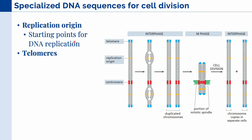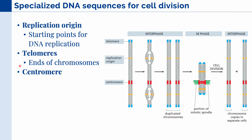Next, we have telomeres, which are the ends of chromosomes, and these are used to prevent damage to the ends of our different chromosomes. Lastly, we have centromeres, where the mitotic spindles attach. And as we can see in this figure, these different sequences are conserved in both interphase and anaphase.